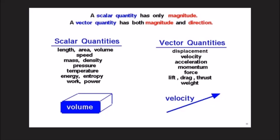A scalar quantity is one that can be expressed by its magnitude alone. For example, length, breadth, area, mass, temperature, density, time, work — for all of these we only express the magnitude, and that is why they are called scalar quantities.